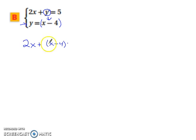Since that's going to replace your y. Everything else stays the same. It still equals 5. All you've done is take the y out and stick x minus 4 in for it.